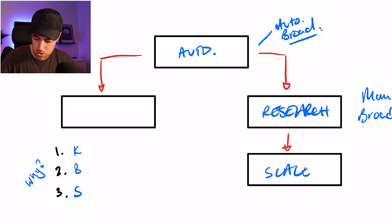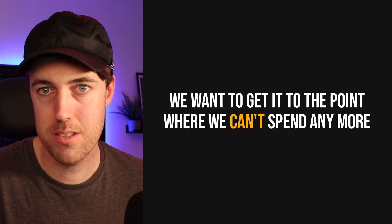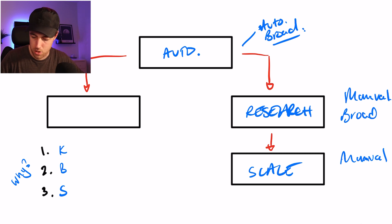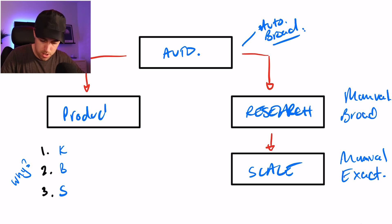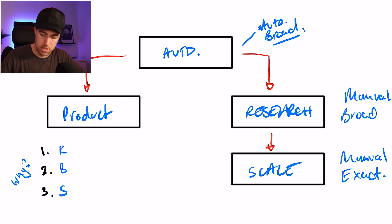Your research campaign is also broad, but this one is a manual campaign — you are giving Amazon a list of keywords to target at broad match. Then your scale campaign — this is where our budget can go to the moon. We want to spend that budget all day long, getting to the point where we can't spend any more because customers aren't searching enough. That's going to be another manual campaign, and it's going to be exact match. And then there's our product targeting campaign. There's no research and scale side for product targeting because your auto campaign is going to find the products, and there's no broad match for product targeting, so it only needs one campaign — which simplifies the whole structure and really halves your workload.